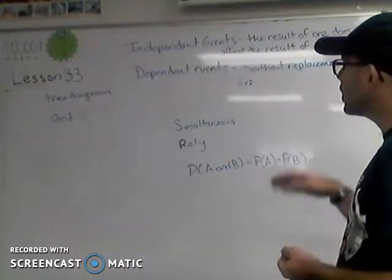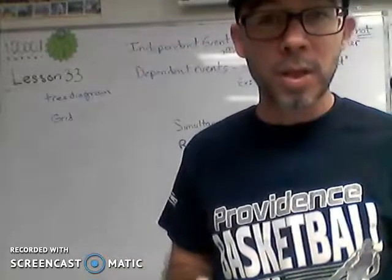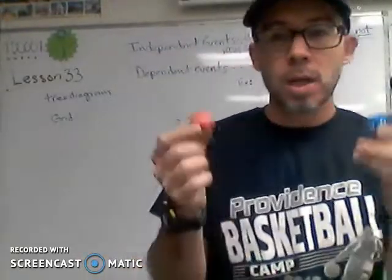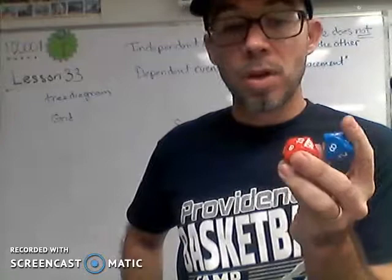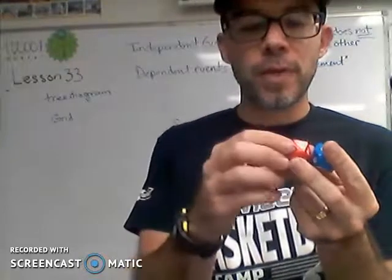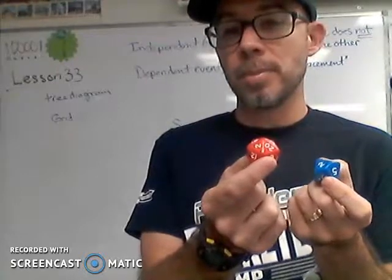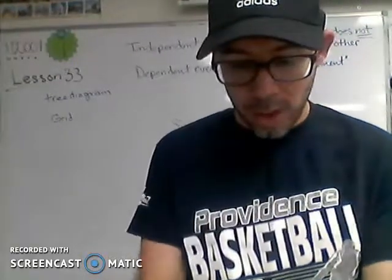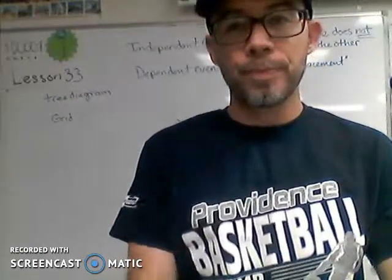A second type of event would be dependent events. We'll get an expression like 'without replacement,' or we're looking for something like the sum of two things. So now if my event is the sum of the two dice, whatever I get on the blue dice is going to affect my total outcome at the end. It's not going to affect what happens on the red one, but the total sum depends on the blue and on the red. One thing depends on the other.